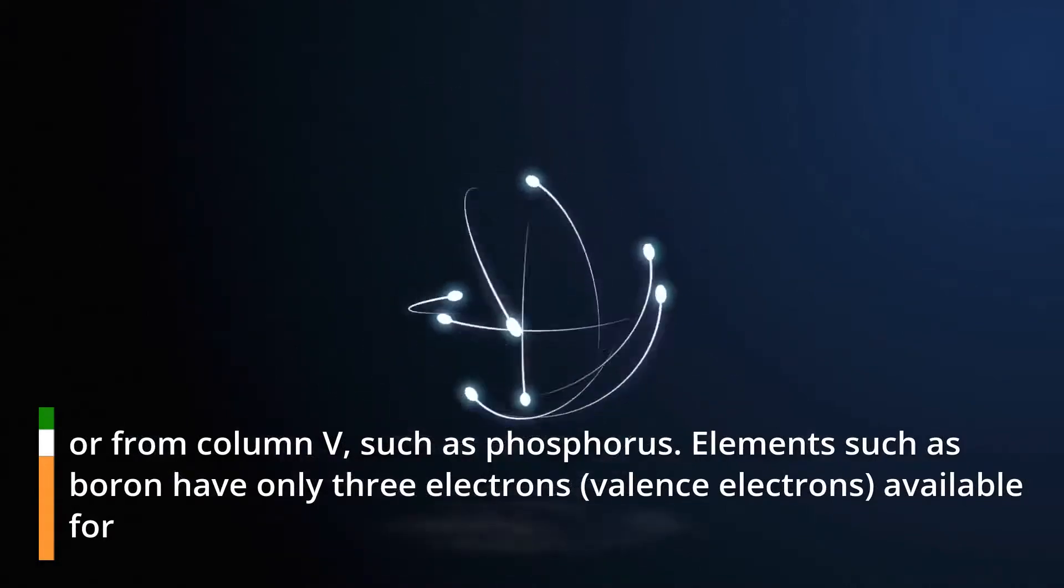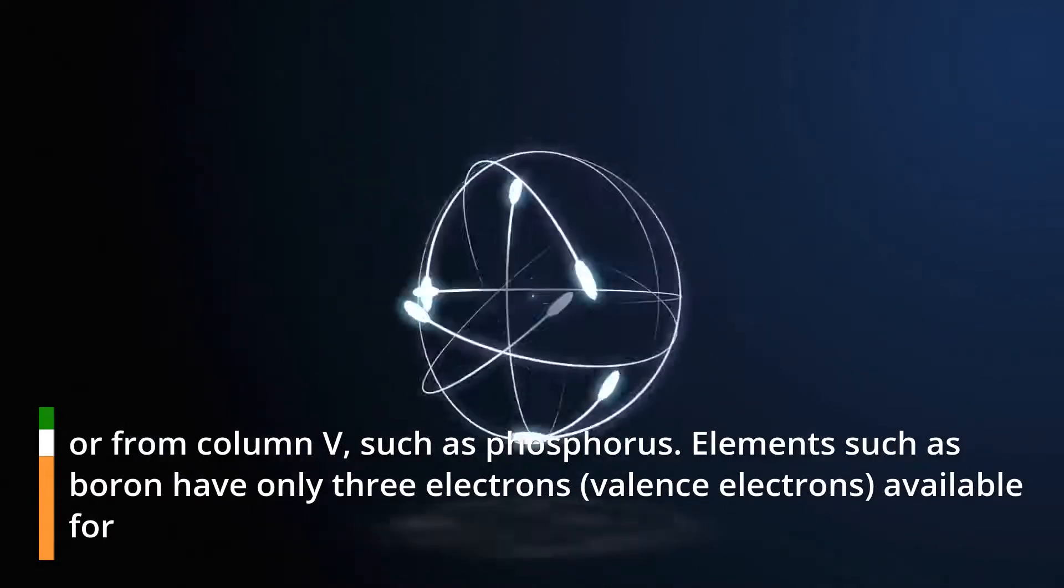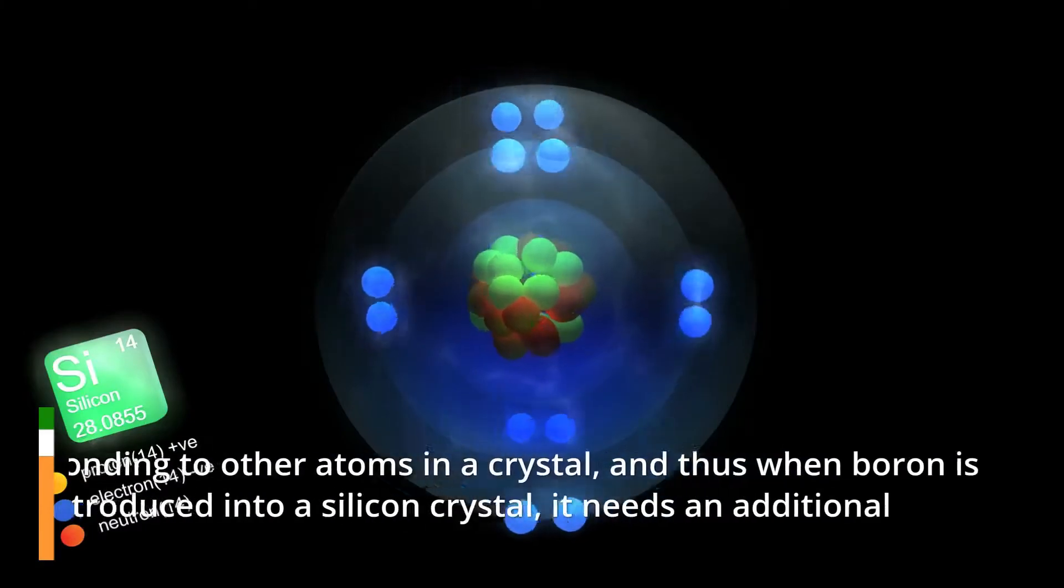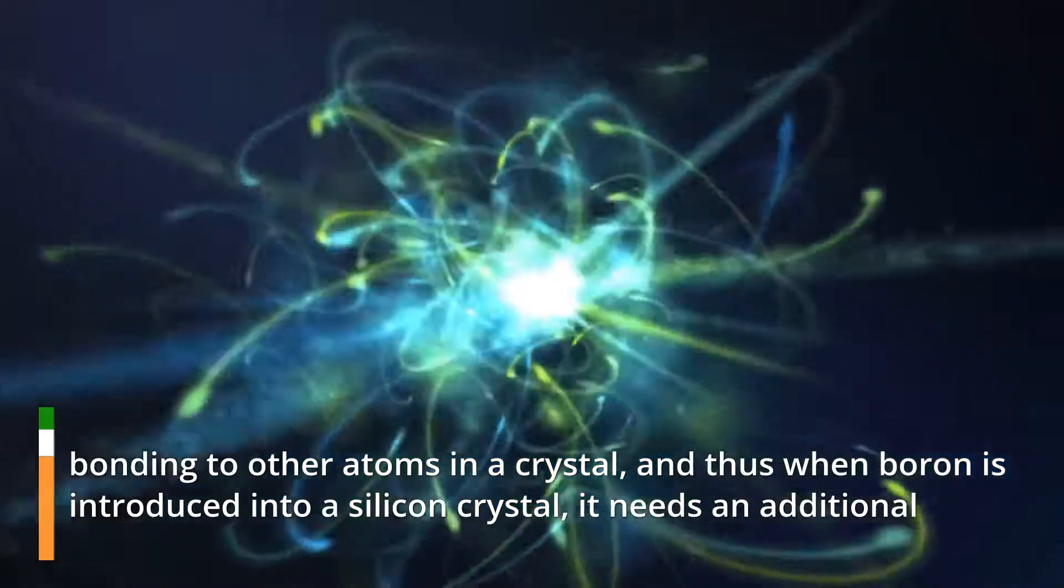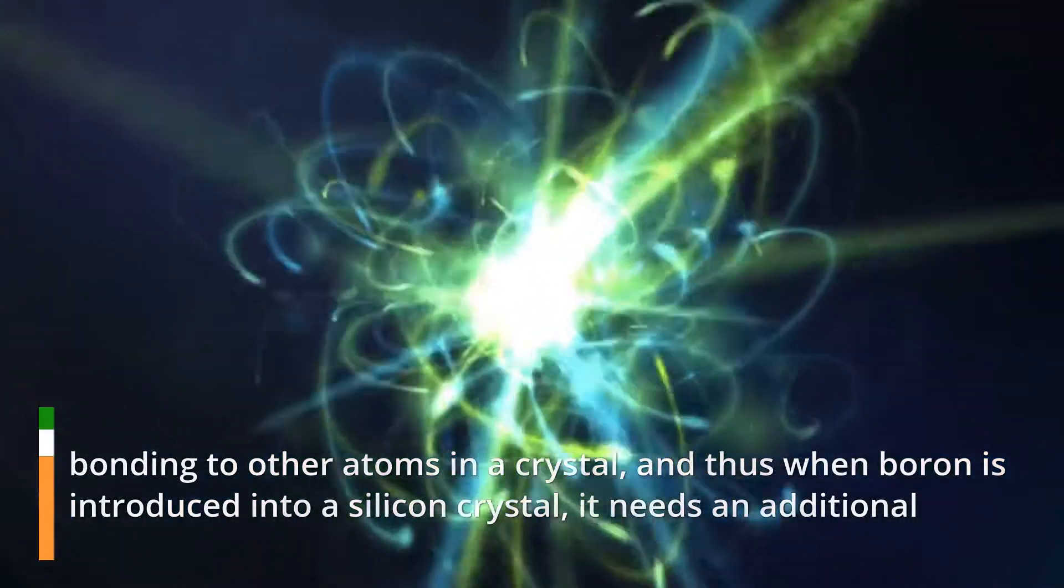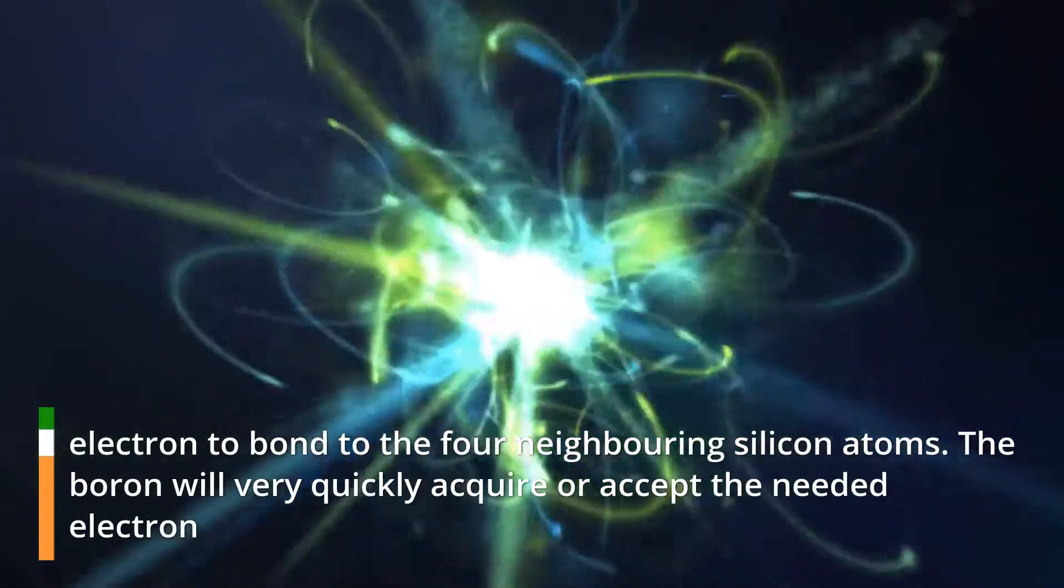Elements such as boron have only three valence electrons available for bonding to other atoms in a crystal, and thus when boron is introduced into a silicon crystal, it needs an additional electron to bond to the four neighboring silicon atoms.